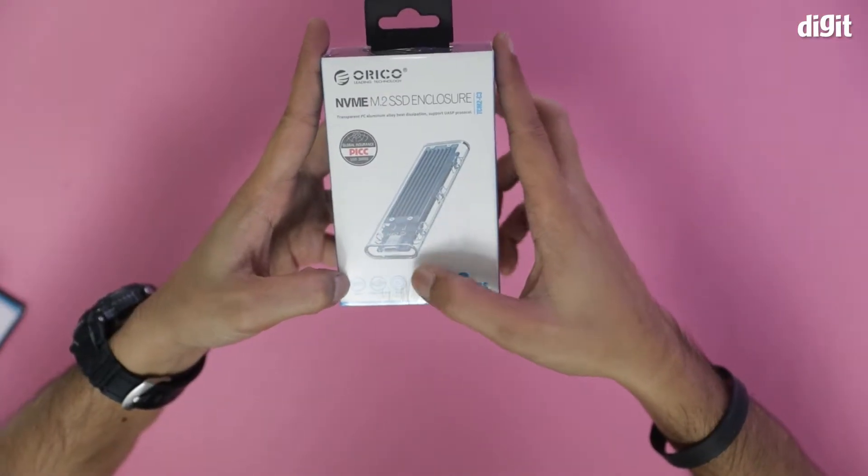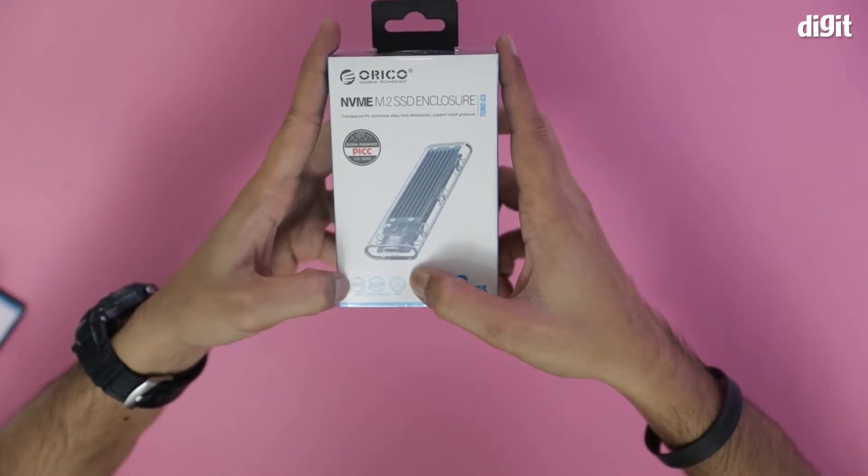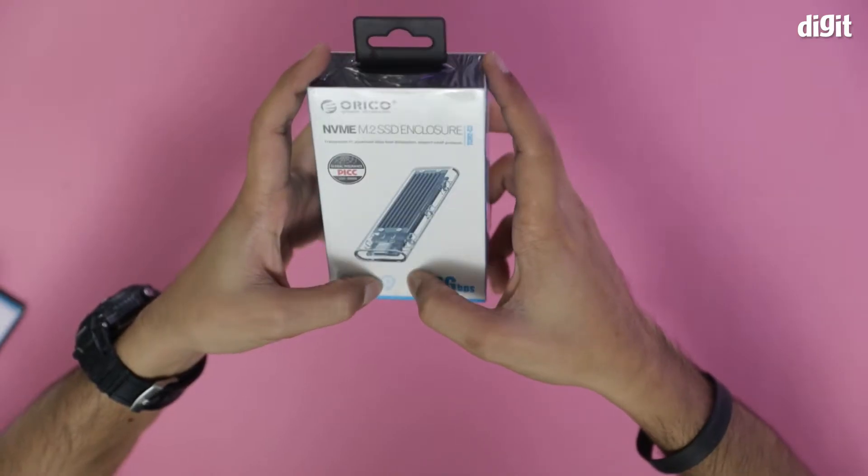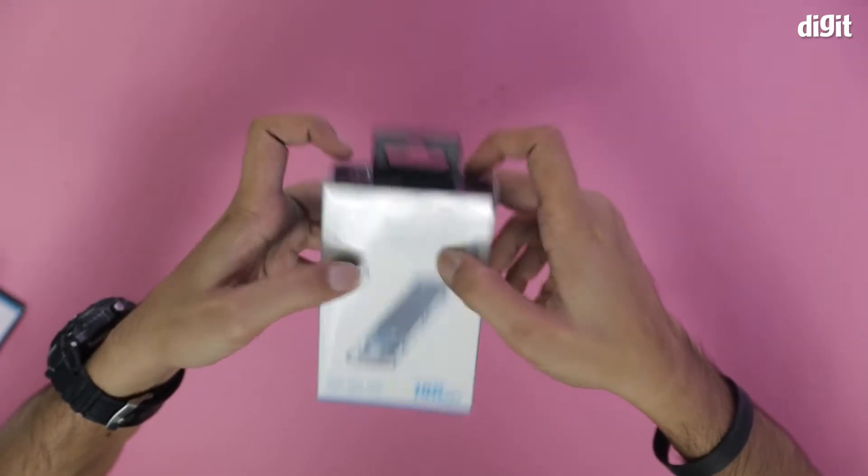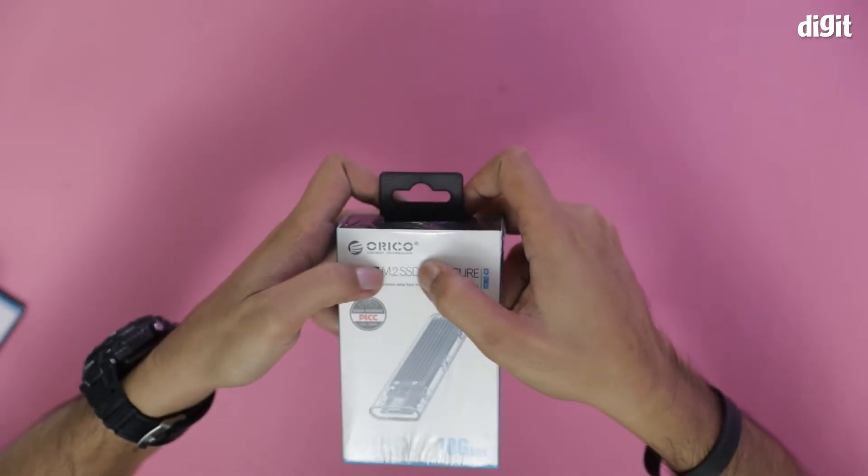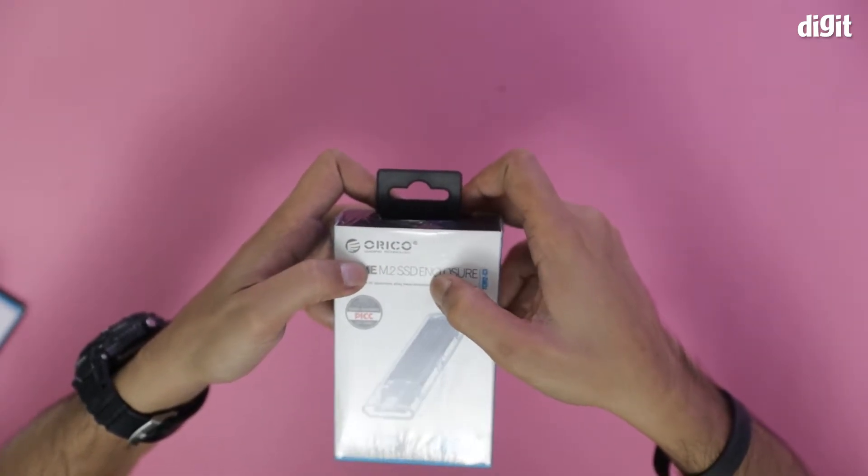What other features are there in the box? There's a type C port, the transparent shell, and it comes with UASP protocol. The transparent PC aluminum alloy heat dissipation.